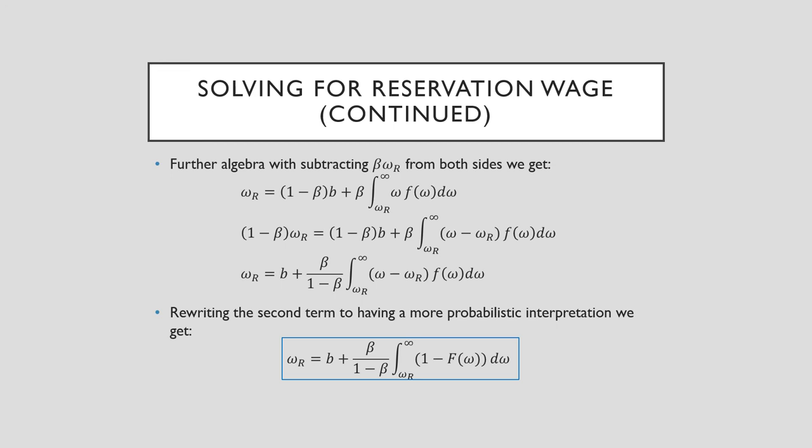So this (1-F(omega)) represents the wages that lie above that. This is the entirety of the baseline McCall model in discrete time. In the next video, we're going to talk about this model, but augment it to see what it looks like in continuous time. I'll see you then. Take care.